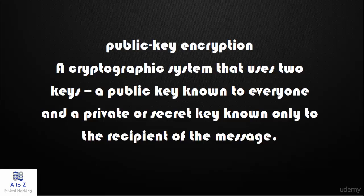When John wants to send a secure message to Jan, he uses Jan's public key to encrypt the message. Jan then uses her private key to decrypt it.